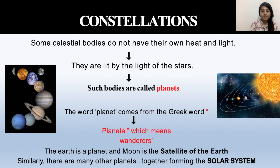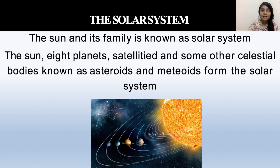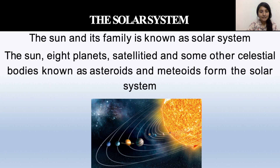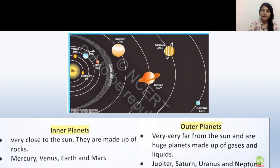Many planets together form a solar system. The solar system is the Sun and its whole family. Currently there are 8 planets, the Sun, satellites, and many asteroids and meteoroids. An important distinction is between inner planets and outer planets — the asteroid belt after Mars divides the eight planets into two groups.